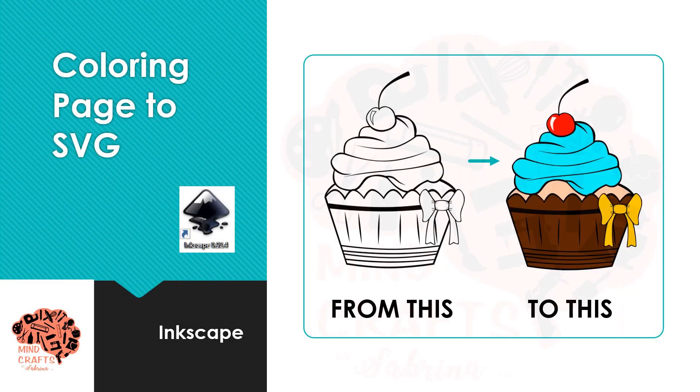In part one, we'll take a coloring page image and convert it into a full color layered SVG file using Inkscape.